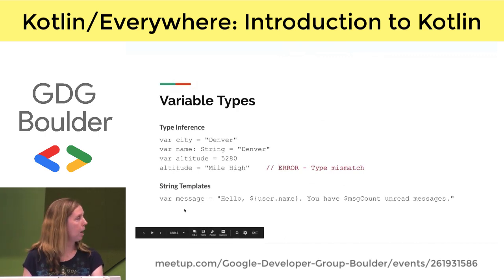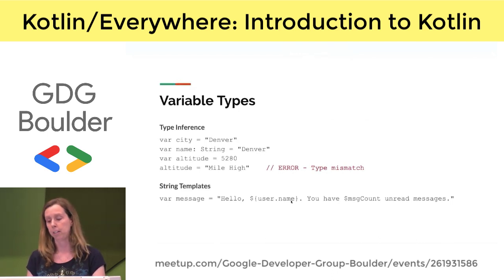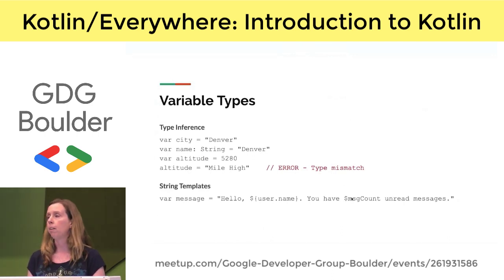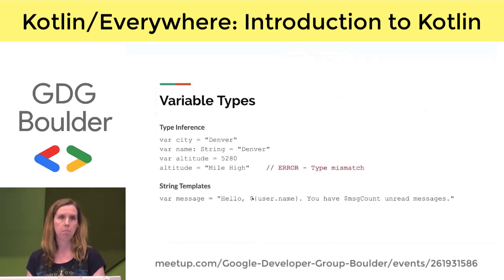The string type in Kotlin is very cool because you can use string templates to create strings — you don't have to use a string builder. You can put variables right into the string with just a dollar sign in front of regular variable names. Or if you have an expression you want to evaluate, you put it in curly braces after the dollar sign.